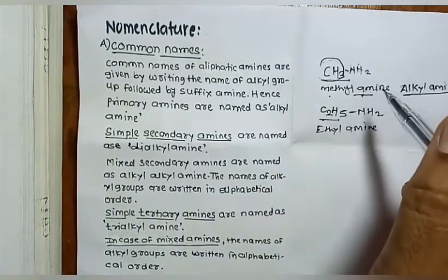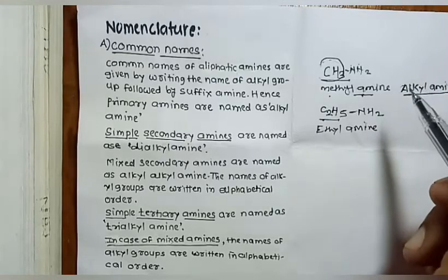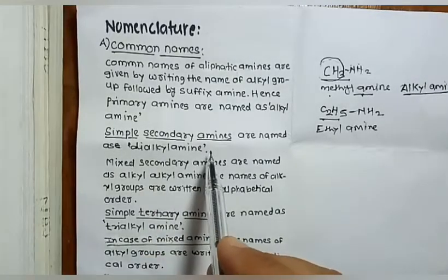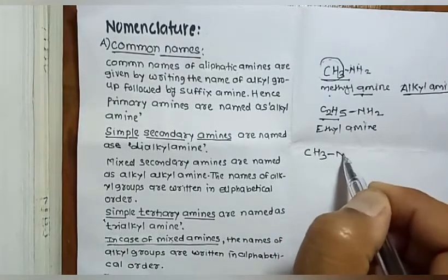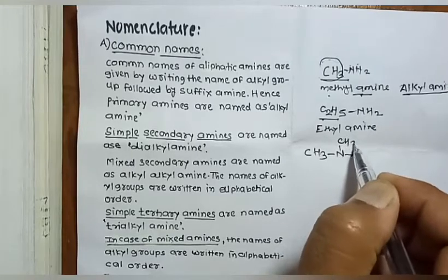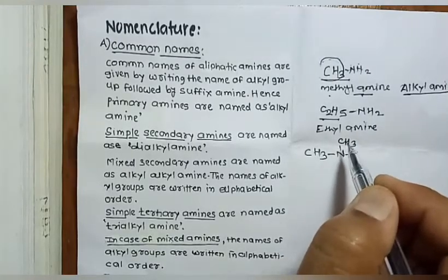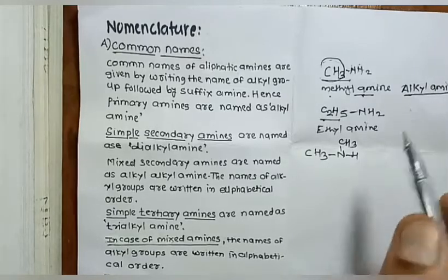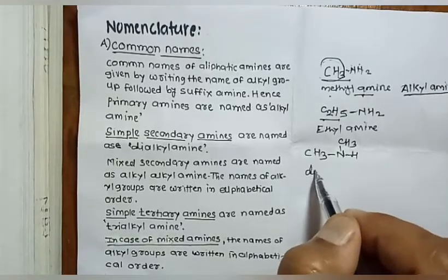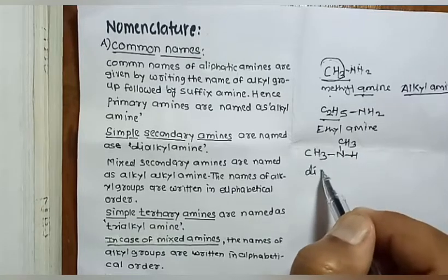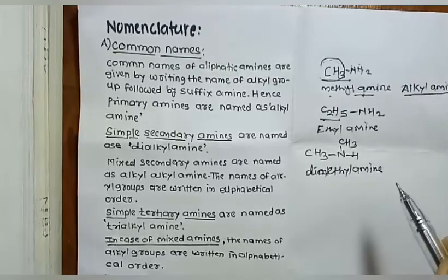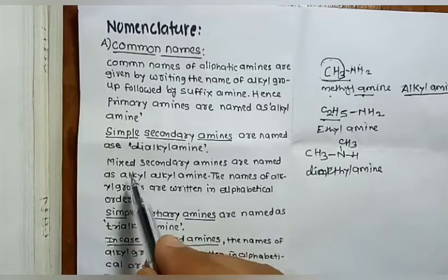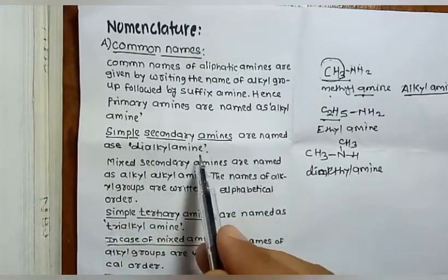Now, regarding the nomenclature of secondary amines: a simple secondary amine contains two similar alkyl groups attached to nitrogen, with both hydrogen atoms of nitrogen replaced. These are named as dialkyl amines using the prefix 'di'. For example, if both groups are methyl, it is 'dimethylamine'.